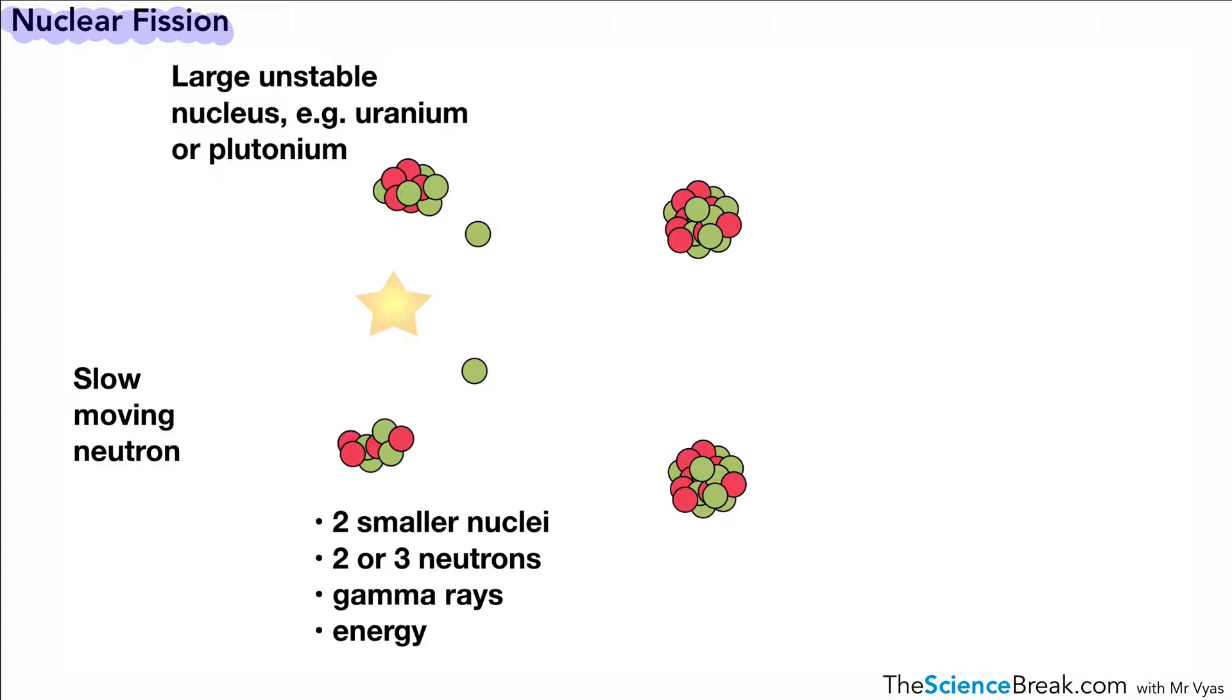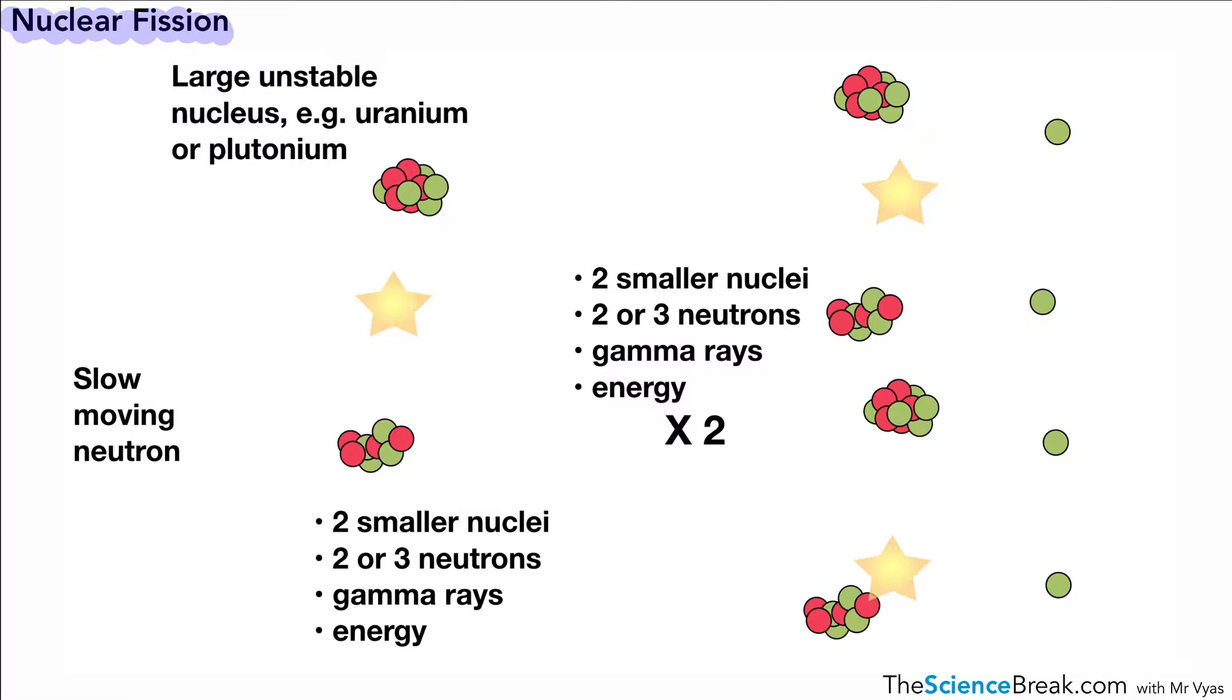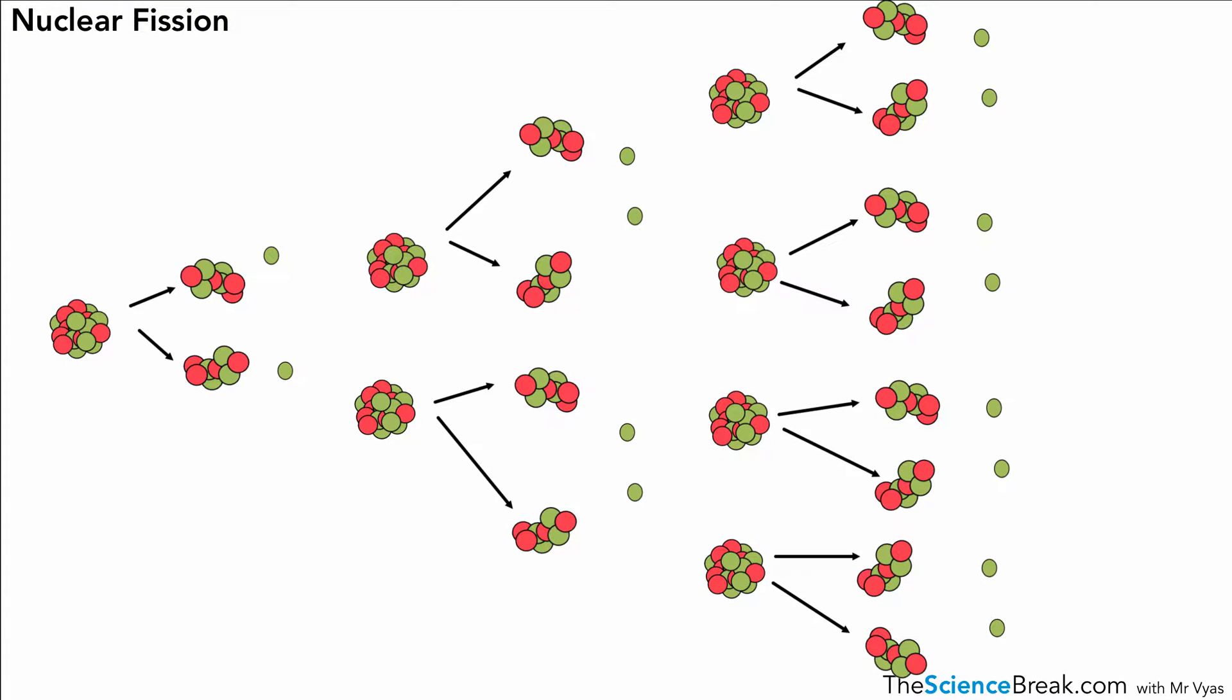That's not the end of it, because those two neutrons can actually go on and cause further fission. They can be absorbed by two more nuclei, and we get the same thing happening again, but this time with two nuclei. The products are two smaller nuclei, two or three neutrons, gamma rays, and energy, but this time it's doubled because we're working with two nuclei. This can carry on and carry on, keep doubling and doubling, and cause what we call a chain reaction.